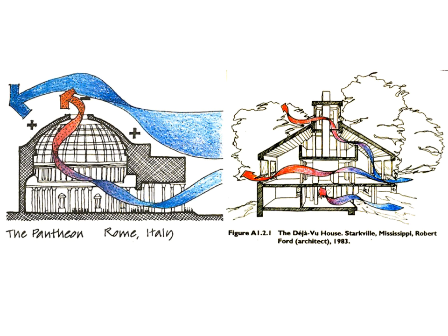Moving on to stack ventilation — here are two examples, one more contemporary on the right and one more classical on the left. In stack ventilation, the section is critical, whereas cross ventilation relies on open plans with an inlet on one side and an outlet on the other driven by wind pressure. In stack ventilation, air must move from low to high through the section, driven by the height difference between inlet and outlet — the stack height. Importantly, stack ventilation is not dependent on wind speed, so it works 24/7 whenever the building has a heat gain.